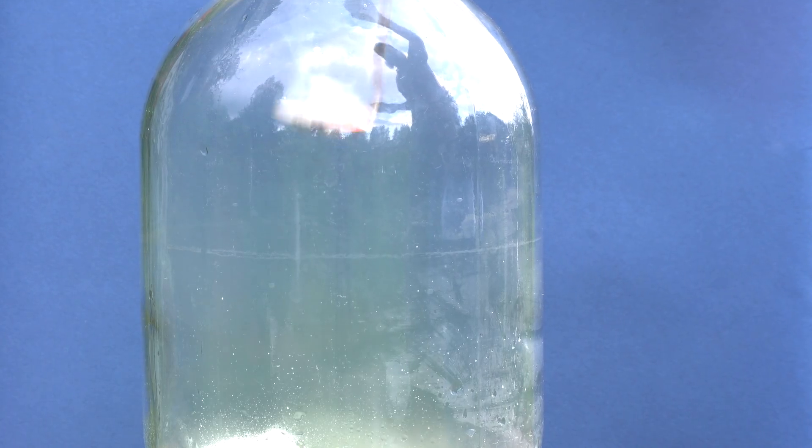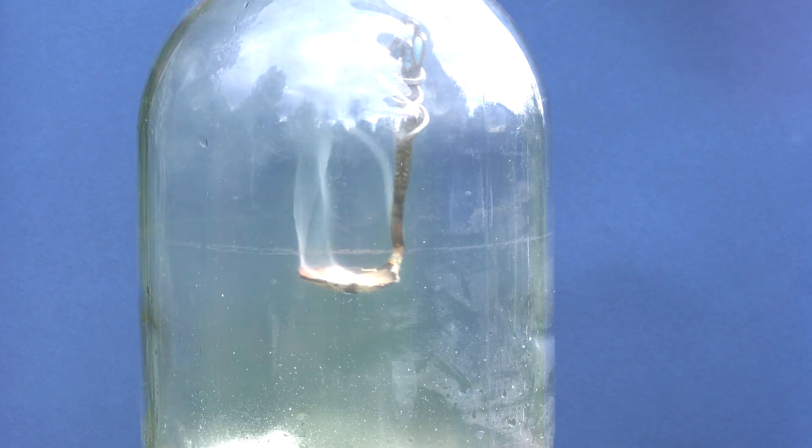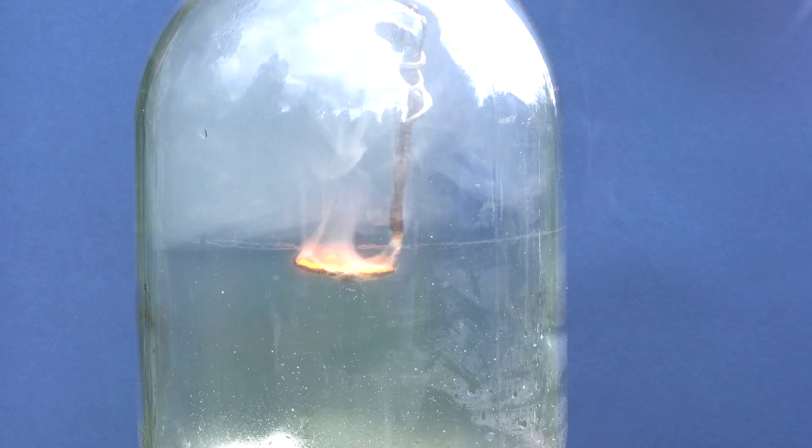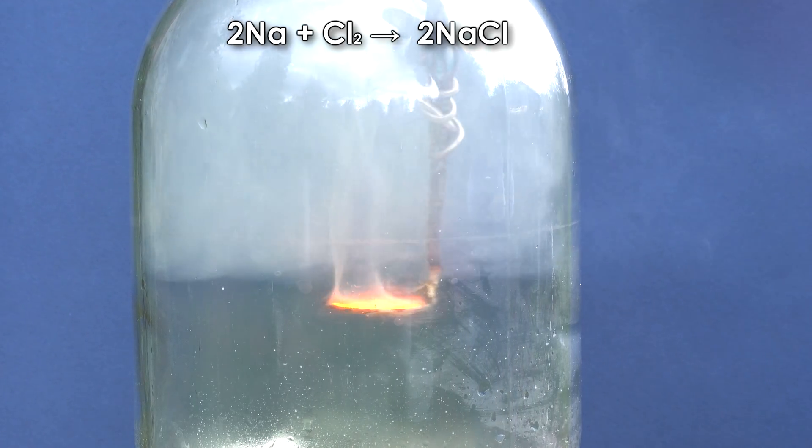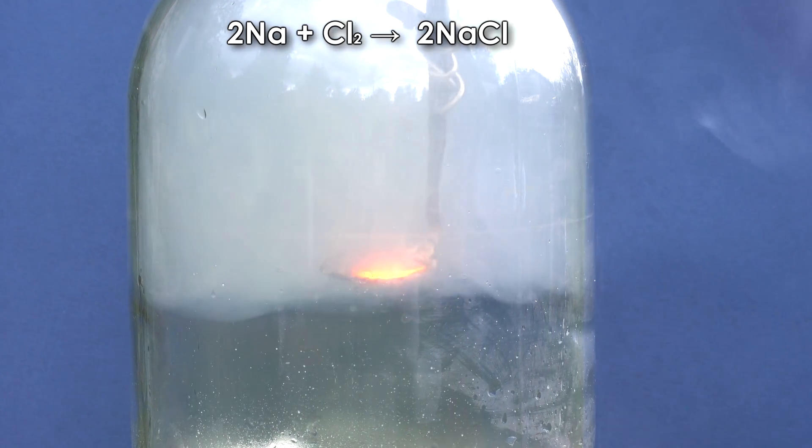The same will happen with metallic sodium, which when burned in pure chlorine, will form the well-known to everybody substance, sodium chloride, or the common table salt. This, in my opinion, is the most unusual way of obtaining table salt.